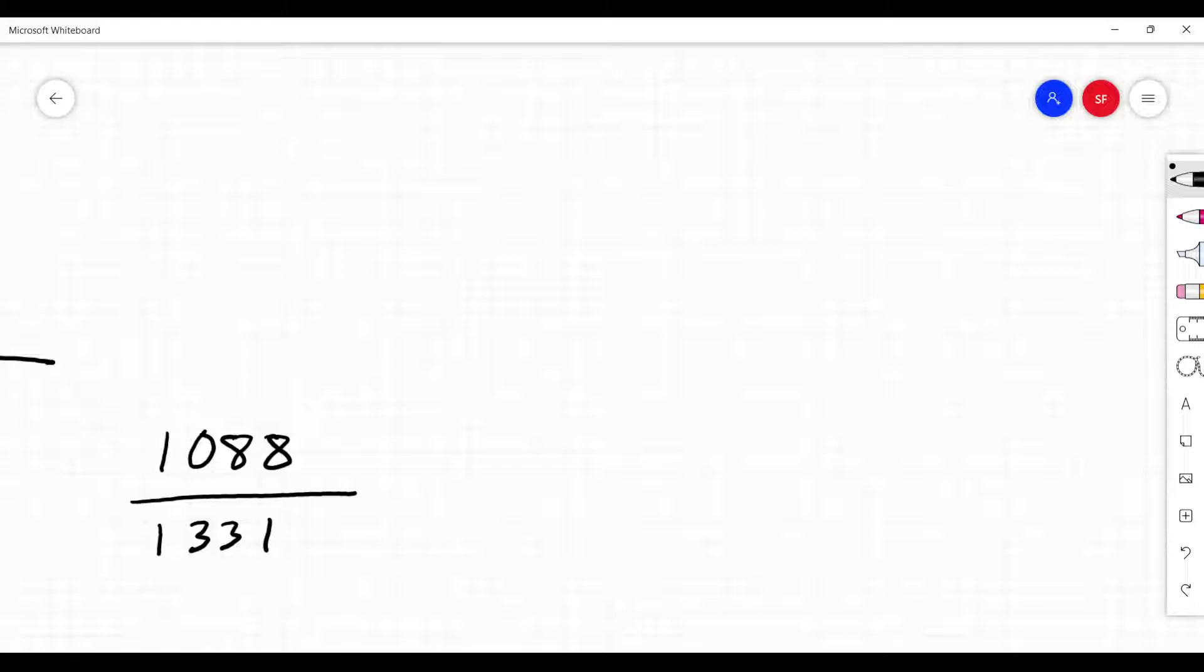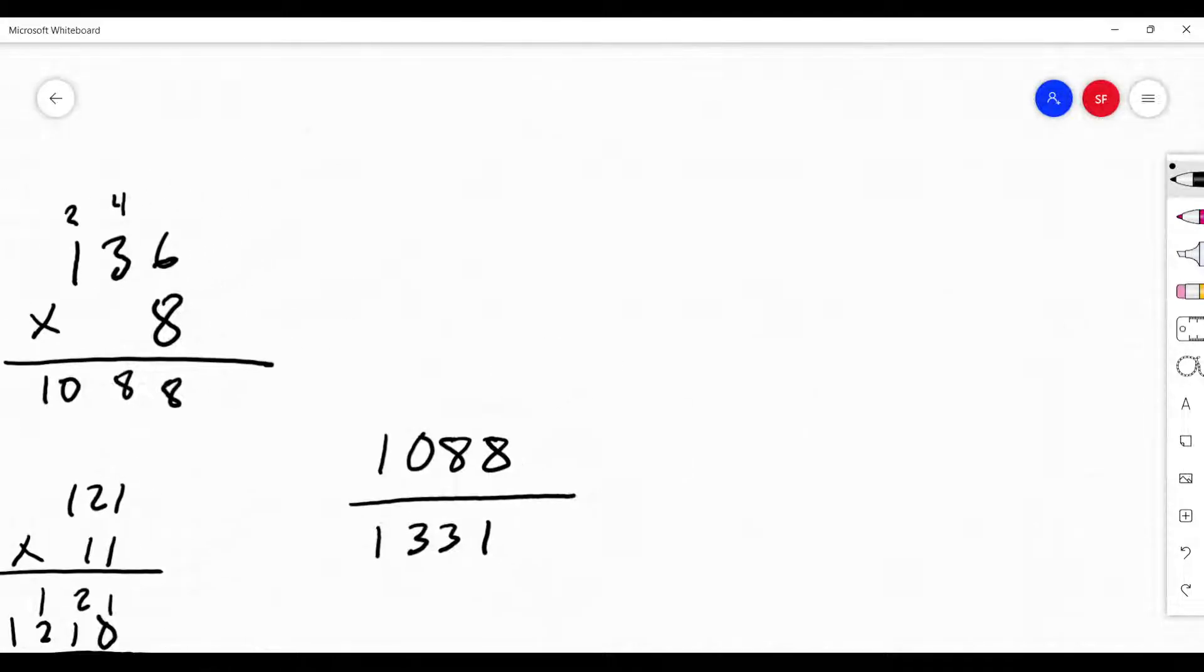Pick something between 2 and 20. Let's try 6. What's the rule for 6? It's not divisible by 3. What's 1 plus 8 plus 8? 17. Is 17 divisible by 6? Not going to work.